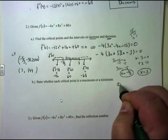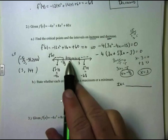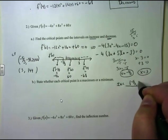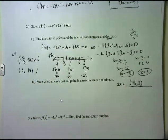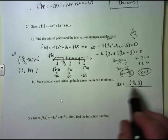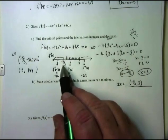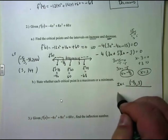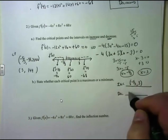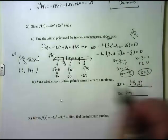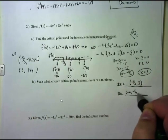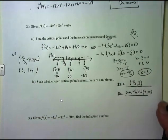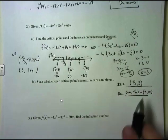To tie this into the intervals: the interval of increase, where the first derivative is positive, is between -5/3 and 3 — written as (-5/3, 3). Always open parentheses, because right at -5/3 and 3 you're neither increasing nor decreasing since those are critical numbers. The interval of decrease is (-∞, -5/3) ∪ (3, ∞).